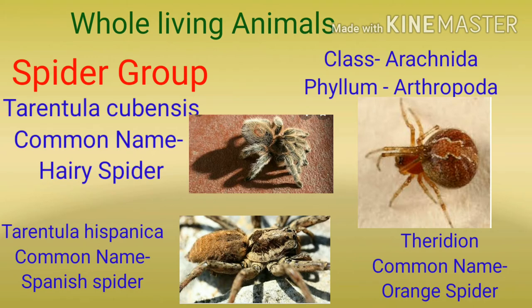इसी category में spider group आता है जिससे homeopathy में बहुत सारी medicines बनती हैं। यहाँ पर class Arachnida और phylum Arthropoda रहेगा। पहला spider है Tarantula cubensis जिसका common name है hairy spider। Second है Tarantula hispanica जिसका common name है Spanish spider। Third है Theridion जिसका common name है orange spider।